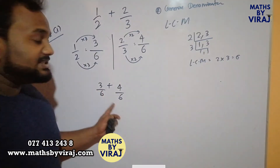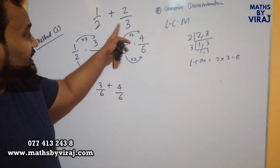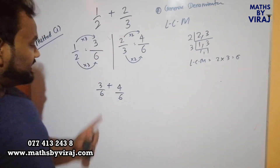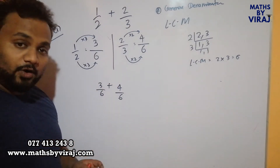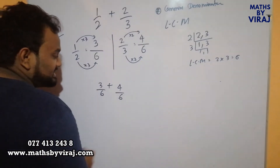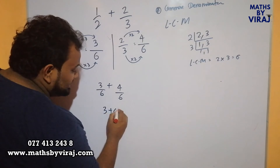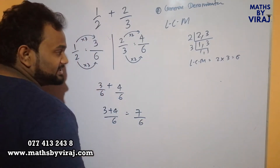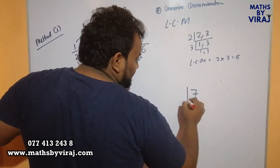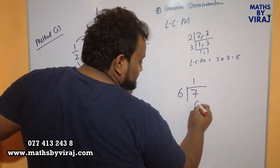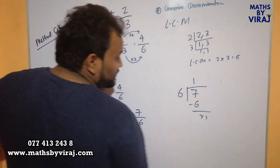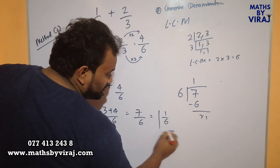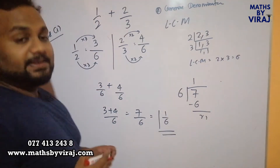Now you can see that the denominators have gradually become the same. Here it was 2, here it was 3 — two different denominators. We converted them to a single denominator: 3 over 6 plus 4 over 6. When the denominators are the same, we can easily add the numerators, which is 7 over 6. Now 7 divided by 6: 6 times 1 is 6 and the remainder is 1. Therefore we can write this as 1 and 1 over 6.